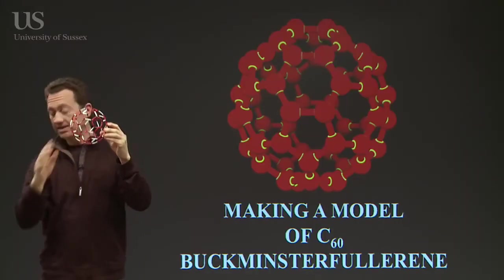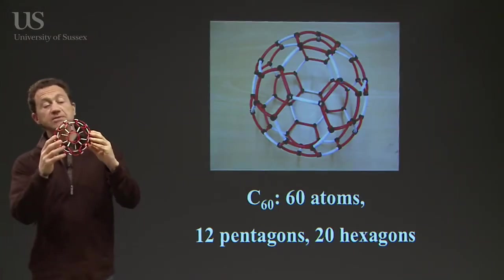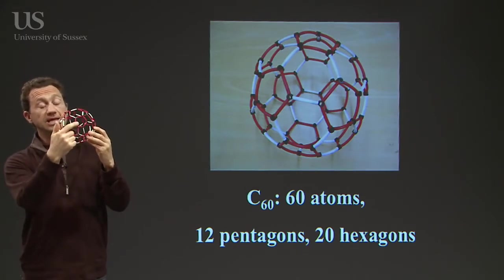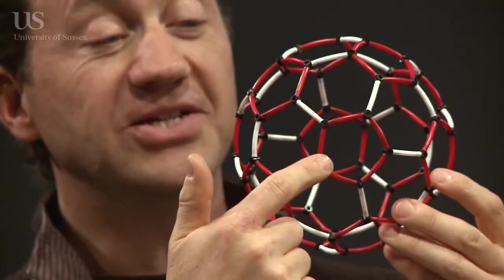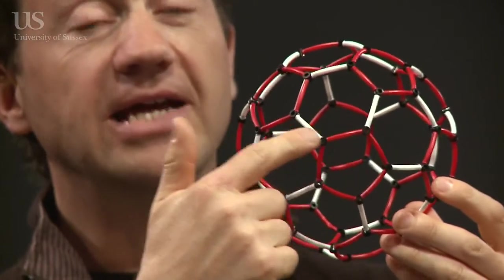Let me take you through the stages of that. The C60 molecule has 60 atoms, of course. These are the black atoms. There's 12 pentagons and 20 hexagon rings.